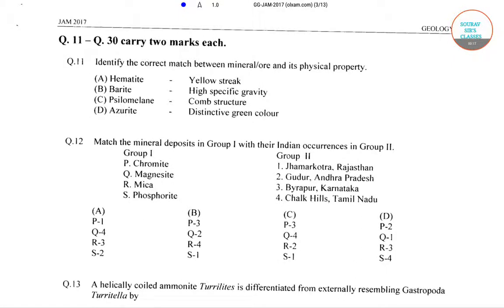Here we have to find a correct match between mineral ore and its physical property. The different options are: first, hematite with yellow streak; second, barite with high specific gravity; third, psilomelane with comb structure; and fourth, azurite with distinctive green color.